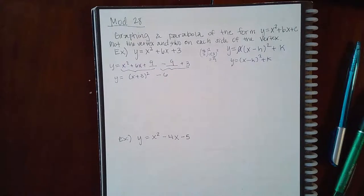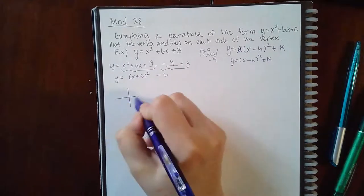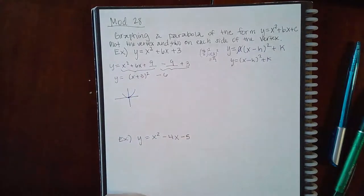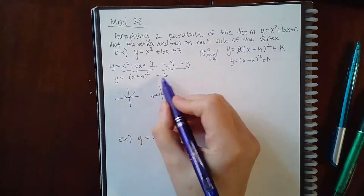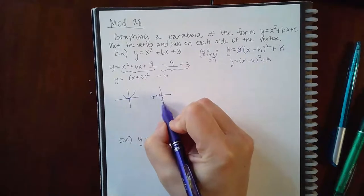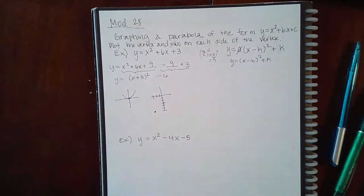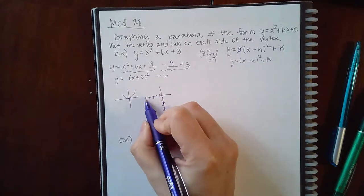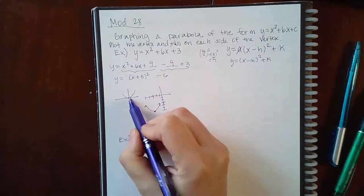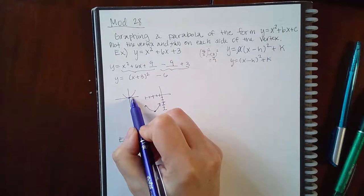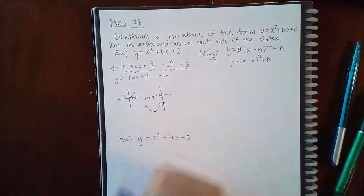Combining the remaining numbers gives negative six. So now we have it in the correct transformation form. A parabola centered at the origin is now moved left three units and shifted down six units, placing the vertex here.